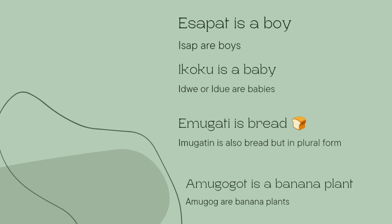Esapart is a boy. Isap — boys. Ikoku — a baby. Eidwe. E mugati is bread. E mugatin is the plural. E mugugot is a banana plant. E mugogu — banana plant.